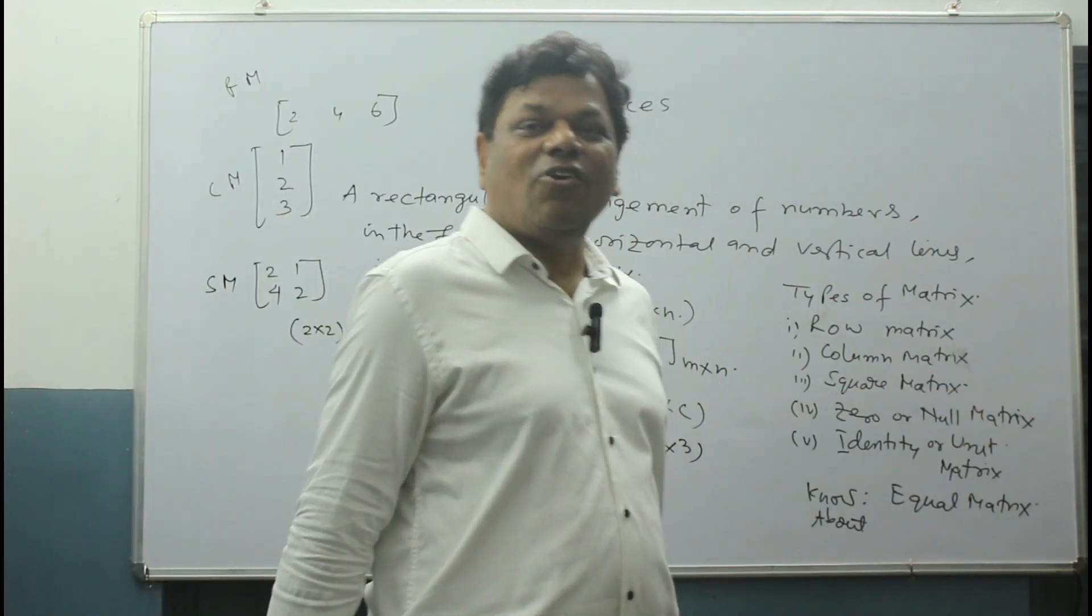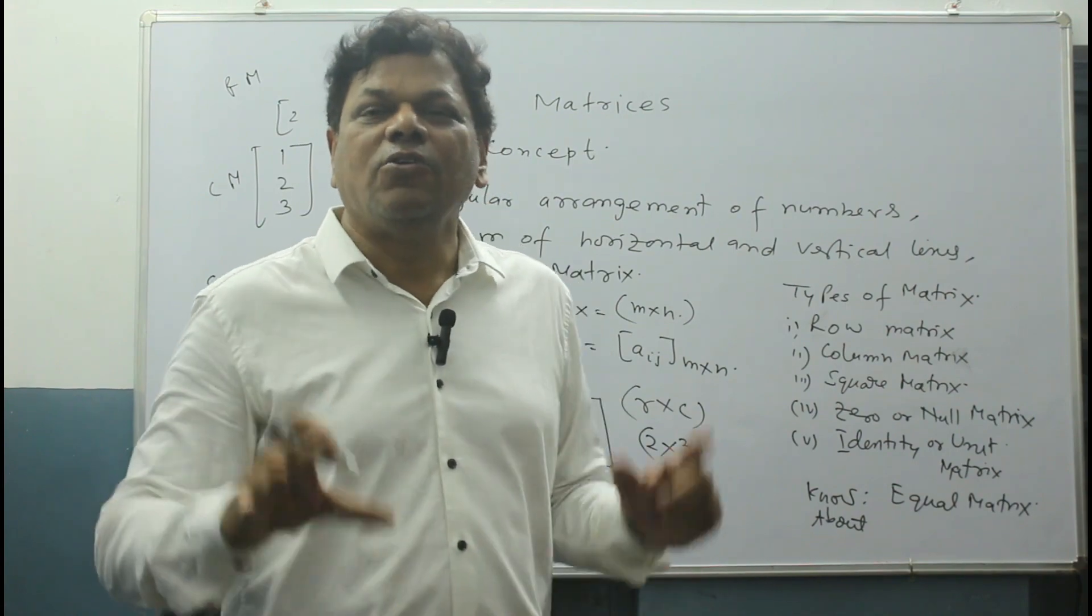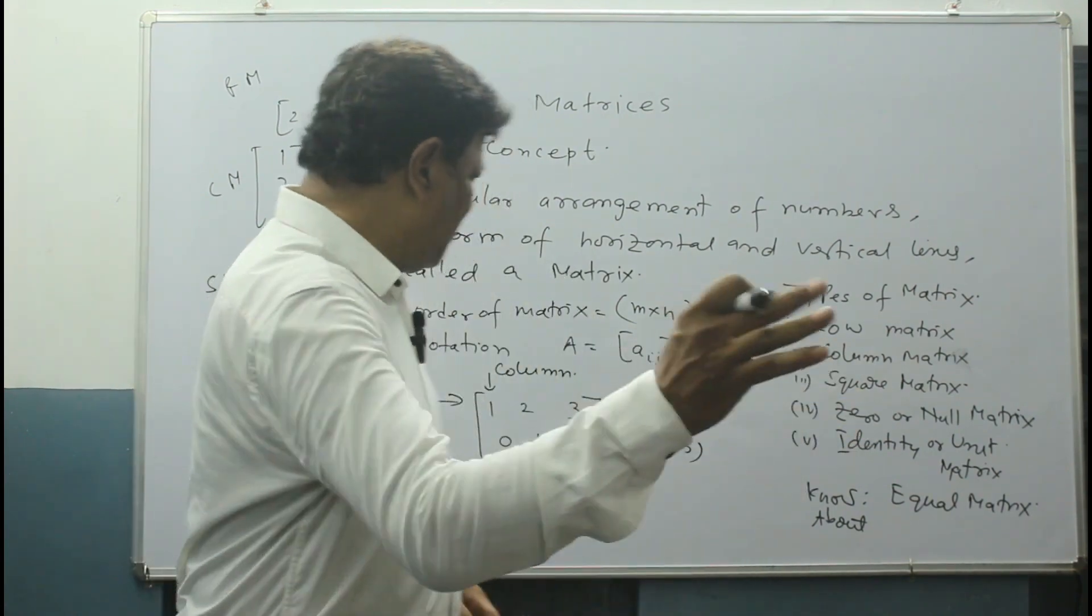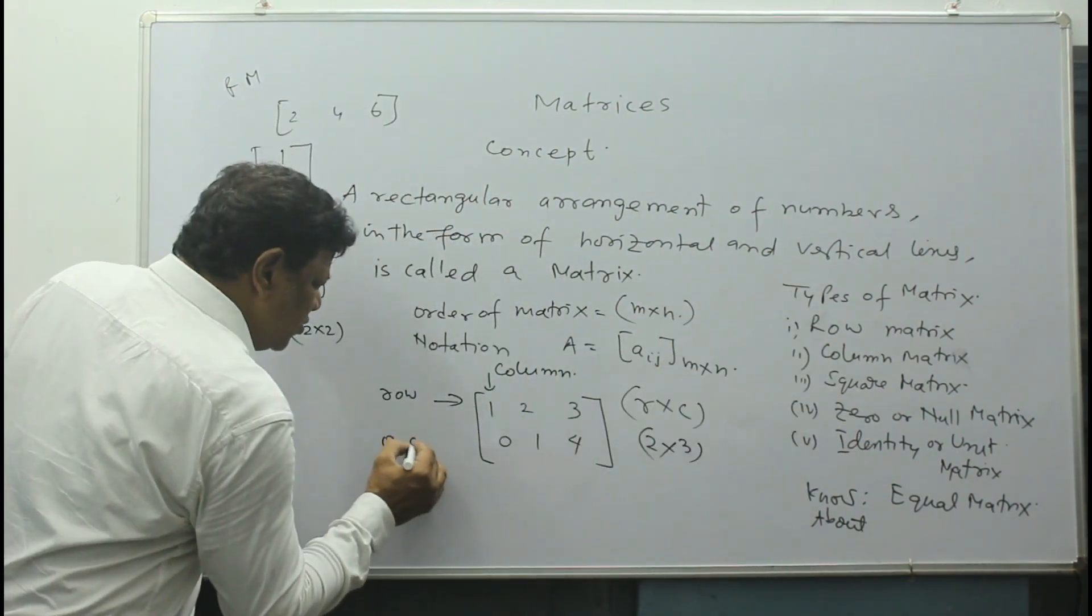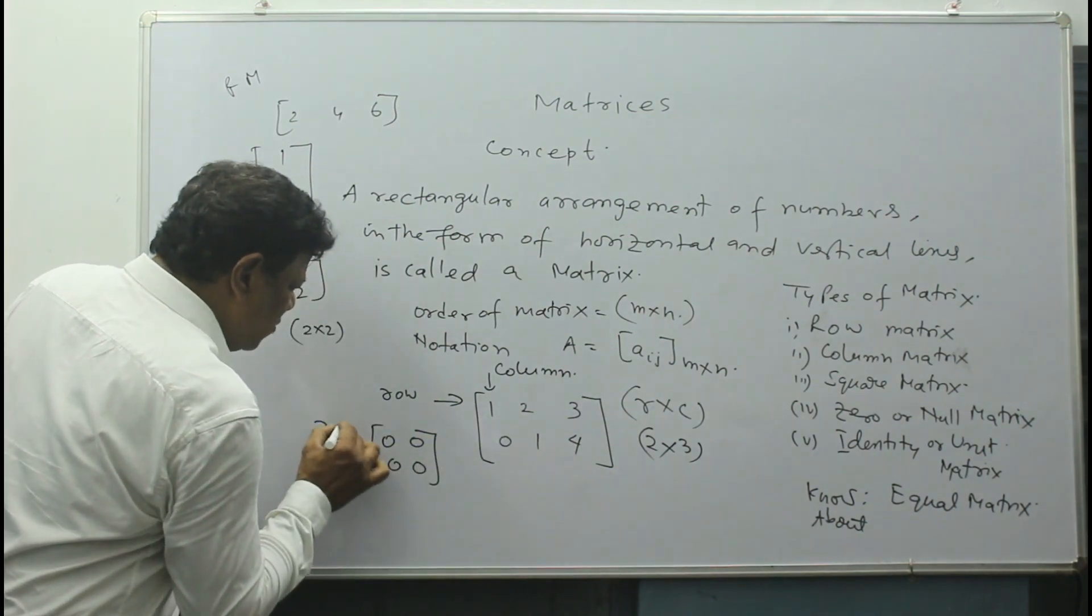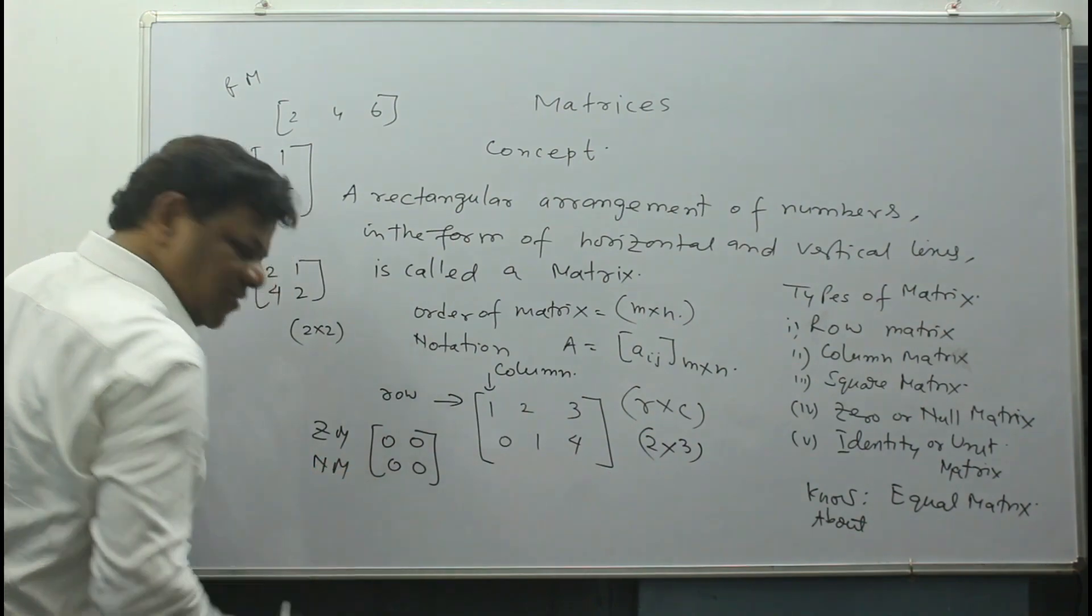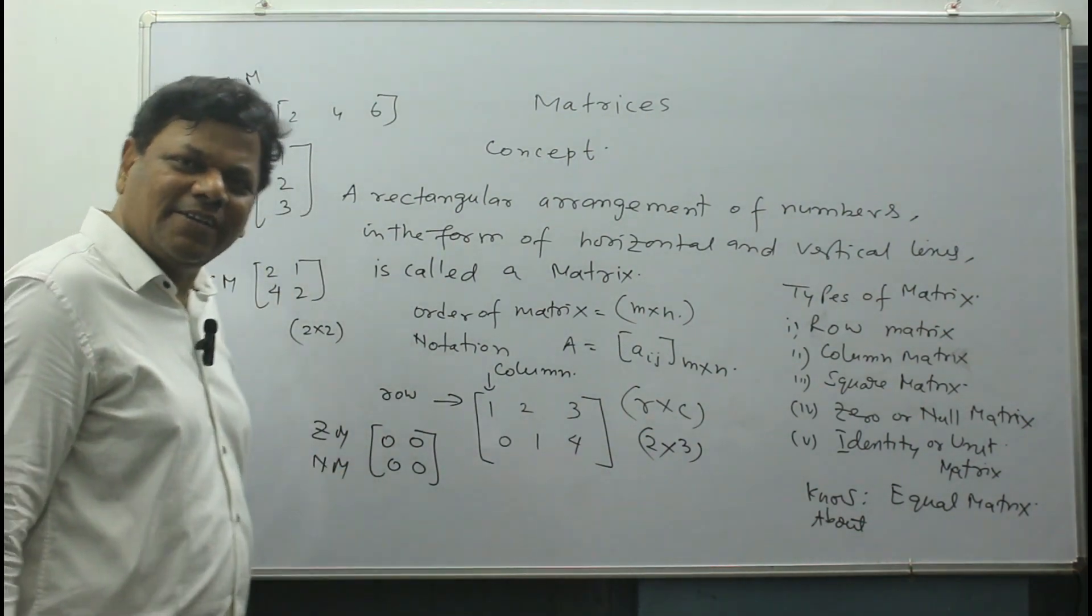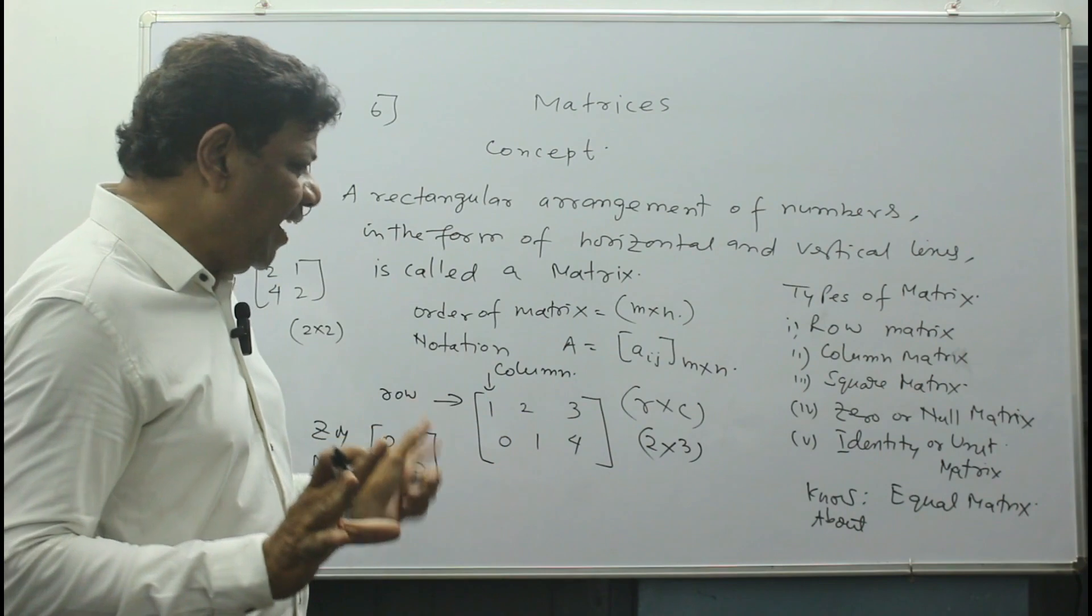Now, zero matrix or null matrix. What is zero? No numbers are given. All are zero. That means, let's say here is given 0, 0, 0, 0—all are zero. It is called zero matrix or null matrix. All the numbers are zero.